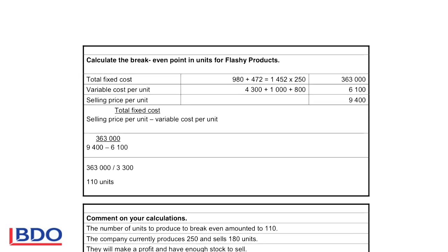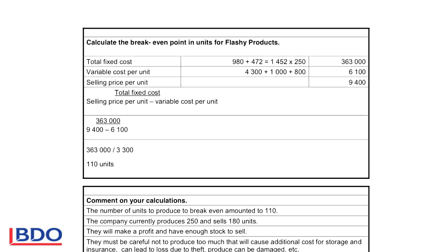If we want to calculate the break even point, we take the total fixed costs that was given to us and we multiply that with the number of units that was produced. And that will give us 363,000.